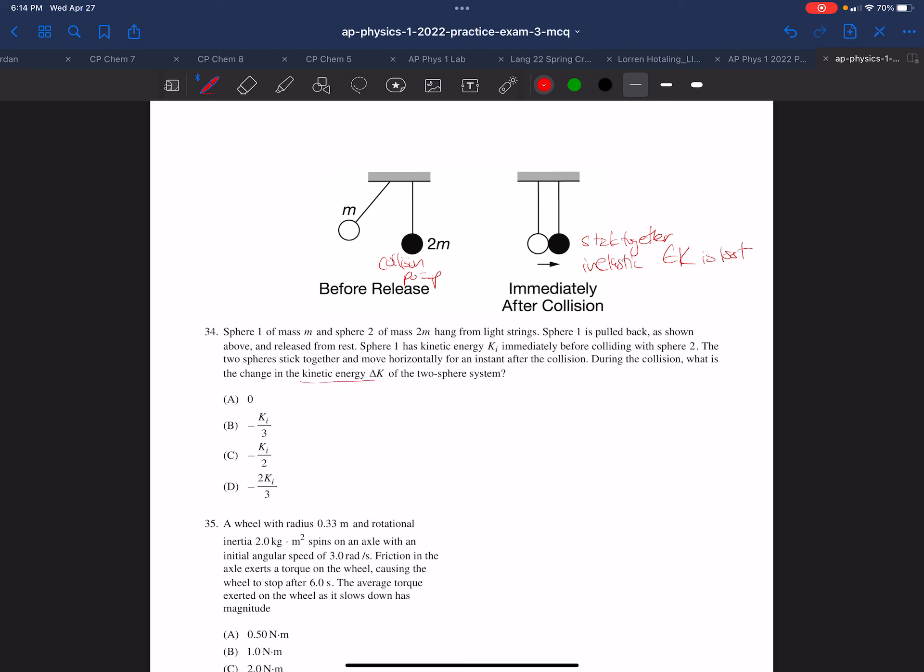So we want to know the change in kinetic energy of the two-sphere system. The change in kinetic energy is going to be the final kinetic energy minus the initial kinetic energy, and they're defining the initial kinetic energy as ki. Now we know since this is an inelastic collision some kinetic energy is lost, so it can't possibly be zero. That allows us to eliminate that right off the bat.